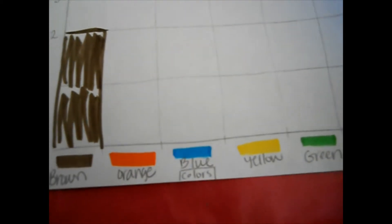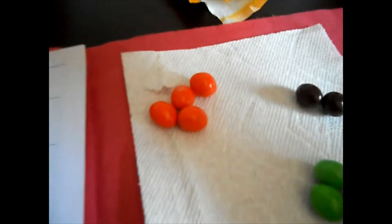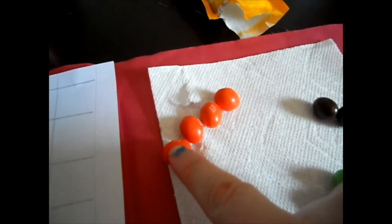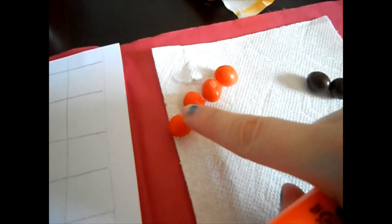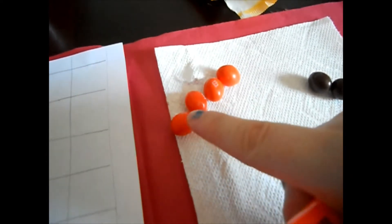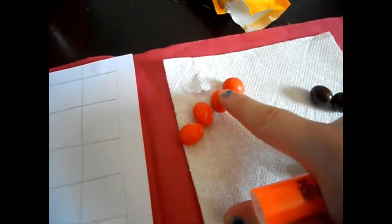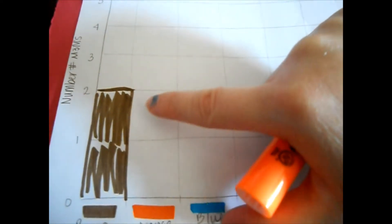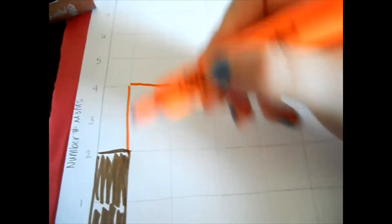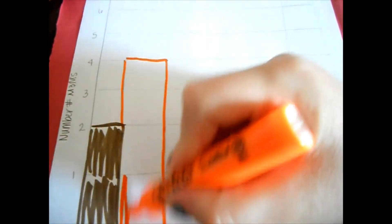The color that is next is orange. So let's go see how many orange M&Ms we have. And since they're round, you might want to help your child count. Or you can have them actually start counting with their fingers. So that way they can actually remember where they stopped or where they started. So 1, 2, 1, 2, 3, and 4. So come back here and we count how many squares. 1, 2, 3, and 4. So we're going to color to this line.